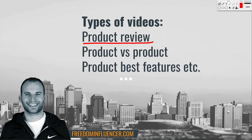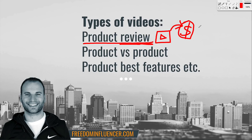The first type I'd recommend is a product review. Why? Because a product review means somebody has buyer's intent — they want the product but are checking reviews before making that final purchase. If they land on your video and click your affiliate link, you're making money as an Amazon affiliate by simply doing this process.